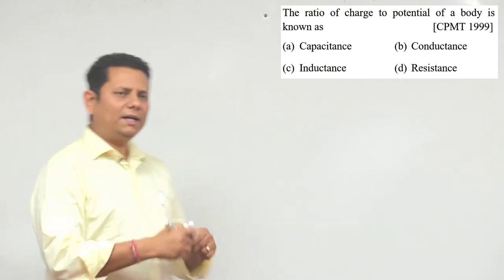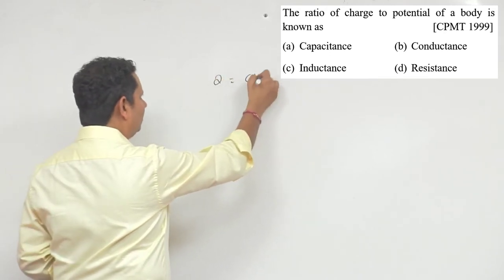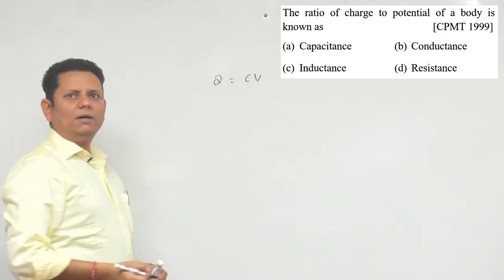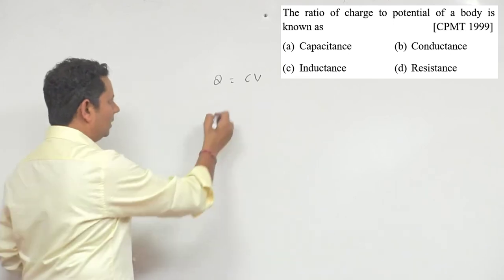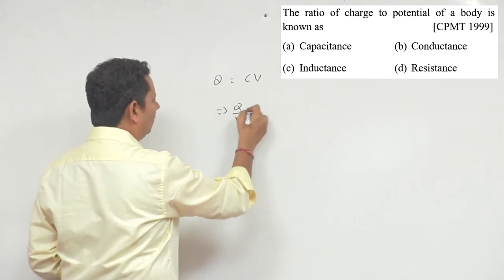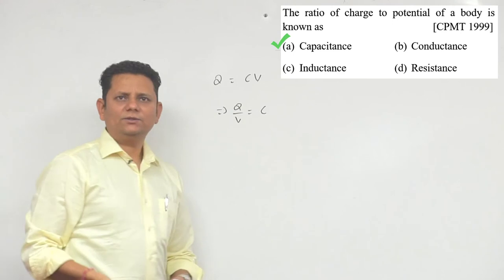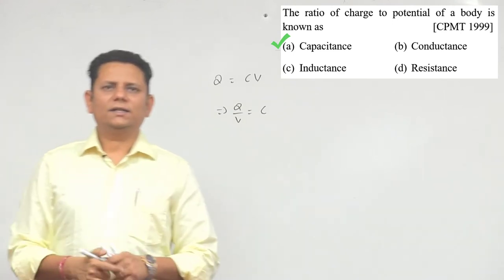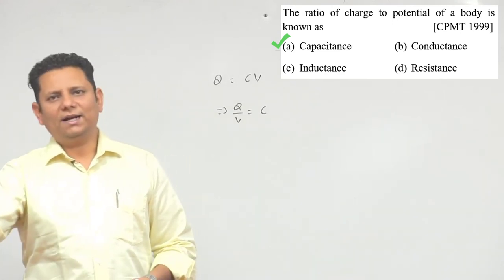It is a very simple question. We know Q is equal to CV, and what we have been asked is the charge to potential ratio, which implies Q divided by V equals C, and C is capacitance. So based on this, we can say that option A, capacitance, would be the right answer.